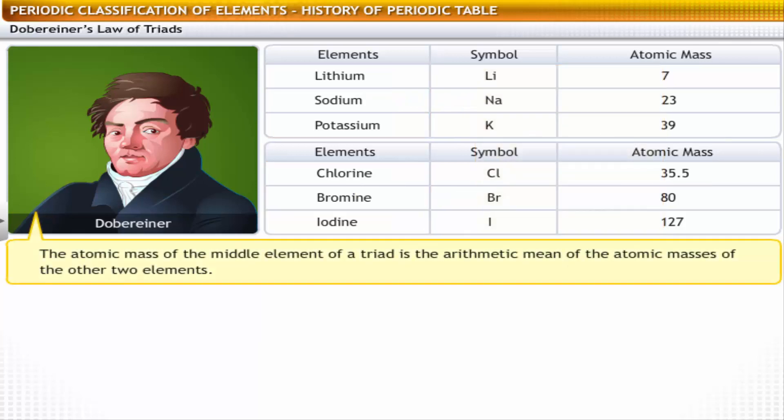Dobereiner's Law of Triads states that the atomic mass of the middle element of the triad is the arithmetic mean of the atomic masses of the other two elements.